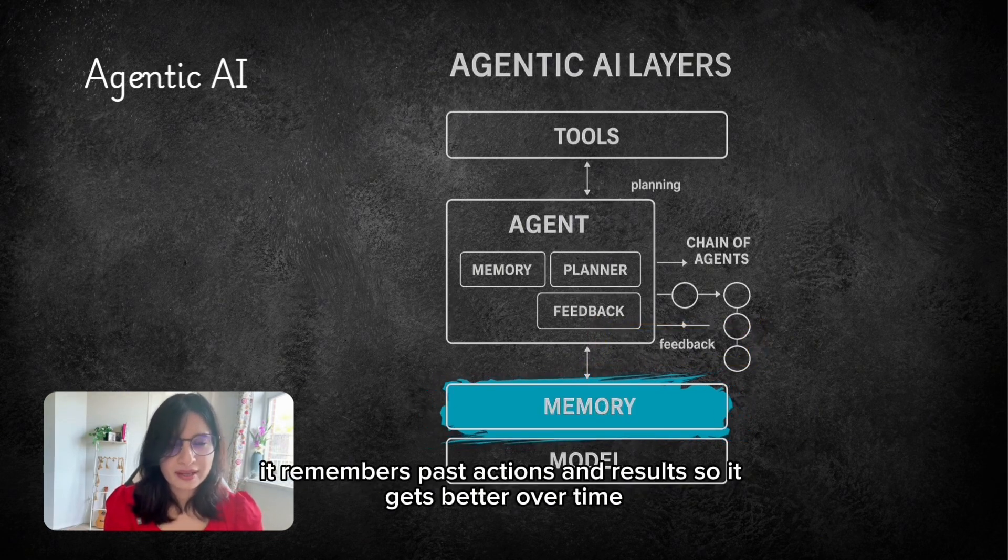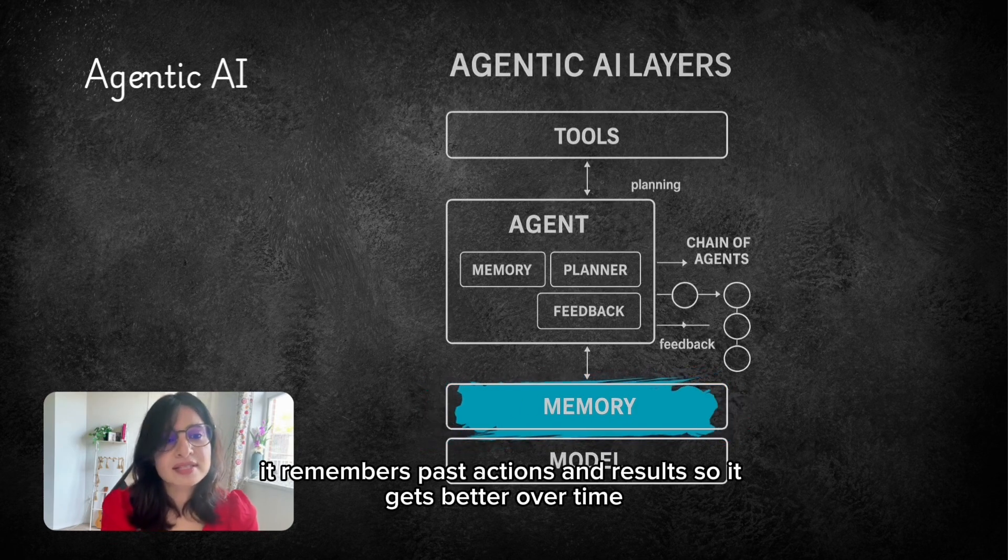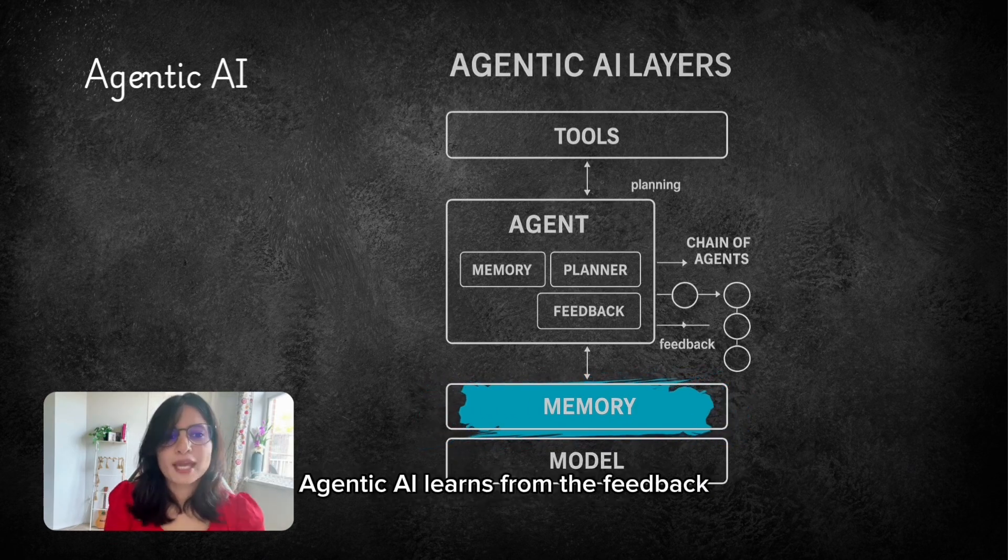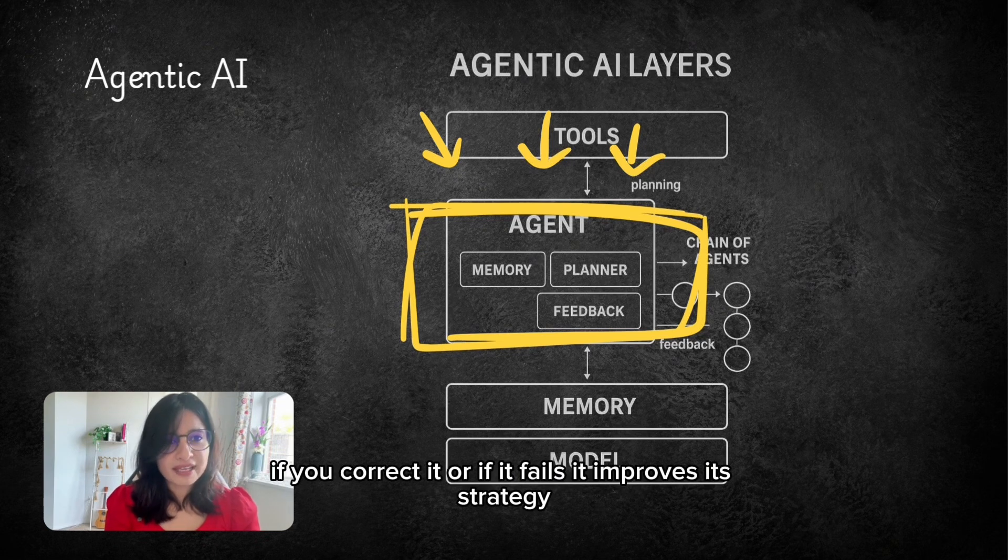So Agentic AI has memory. It remembers past actions and results so it gets better over time. Agentic AI learns from the feedback. If you correct it or if it fails, it improves its strategy.